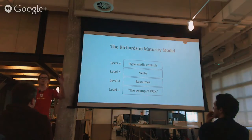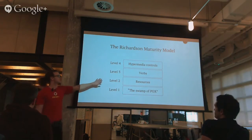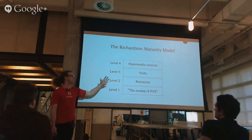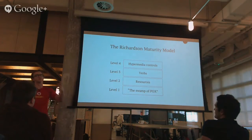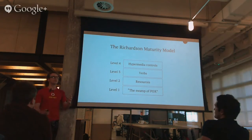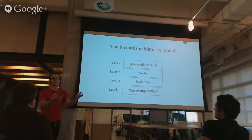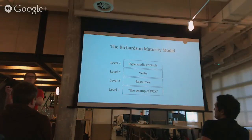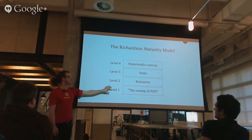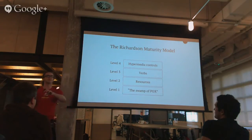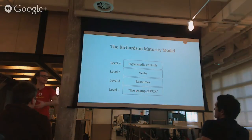Moving to what a lot of people call Web 2.0: level two is where you have resources — concrete parts of your API. You're saying, if you go to this place, you will get the definition of what a user is. You can interact with that user, add an address for them, get their date of birth. You've separated out the objects in your system, and your API actually has some notion of object identity in it.